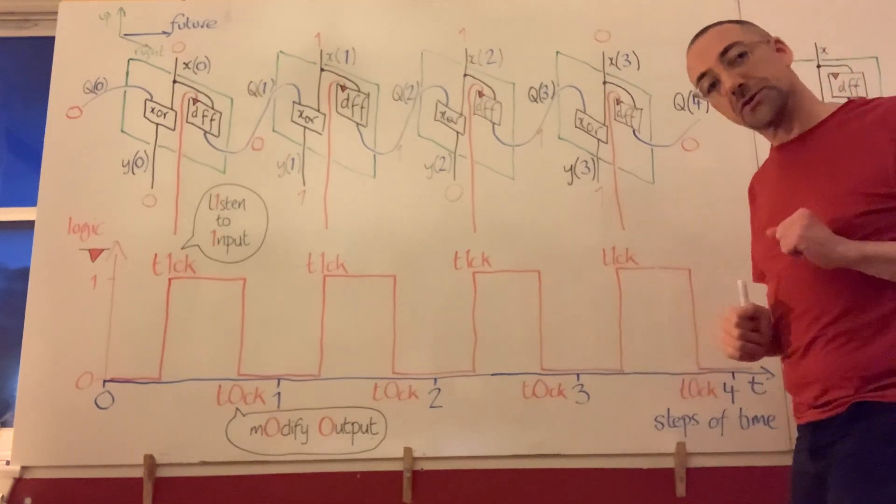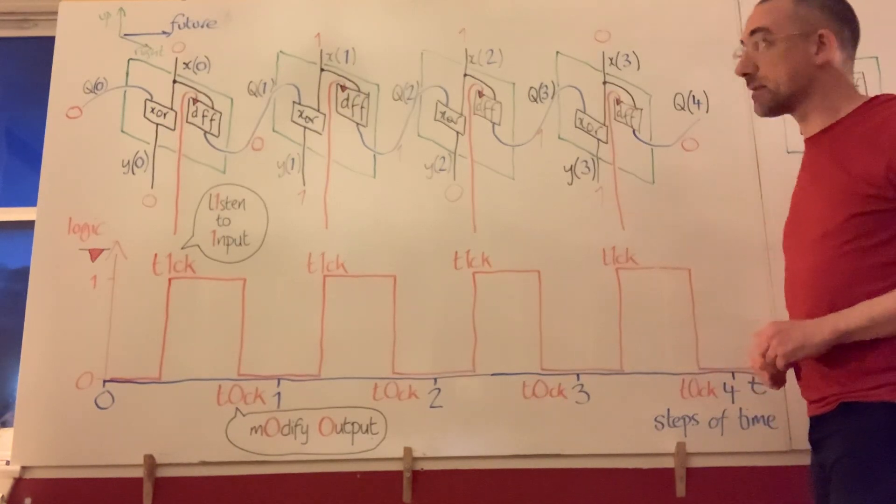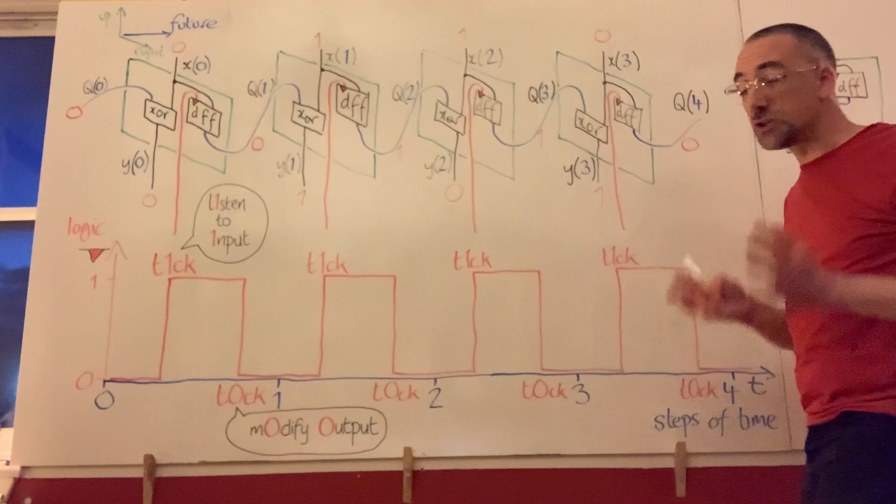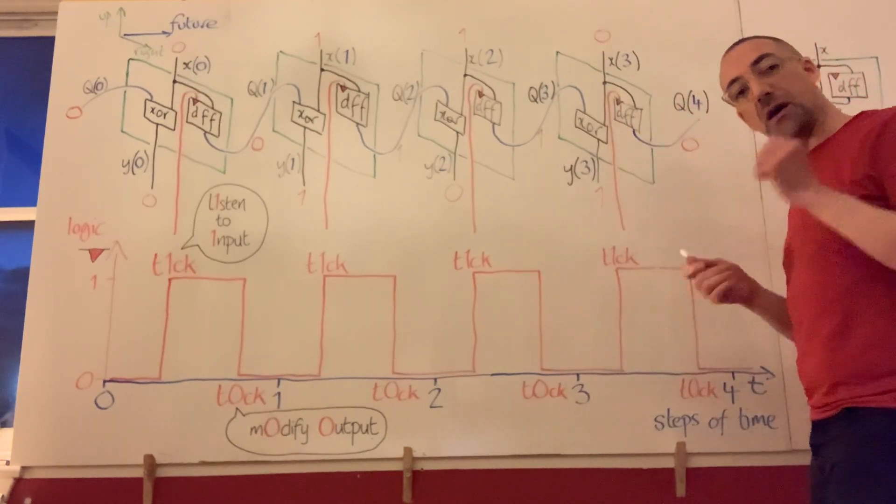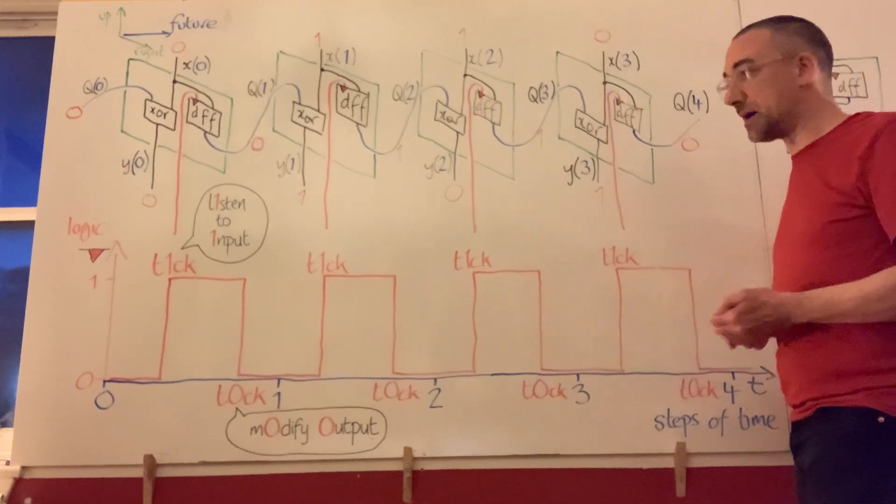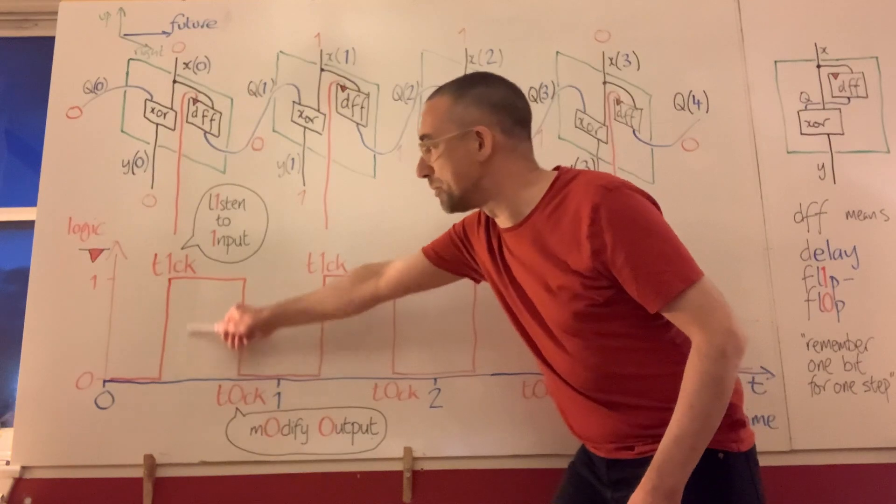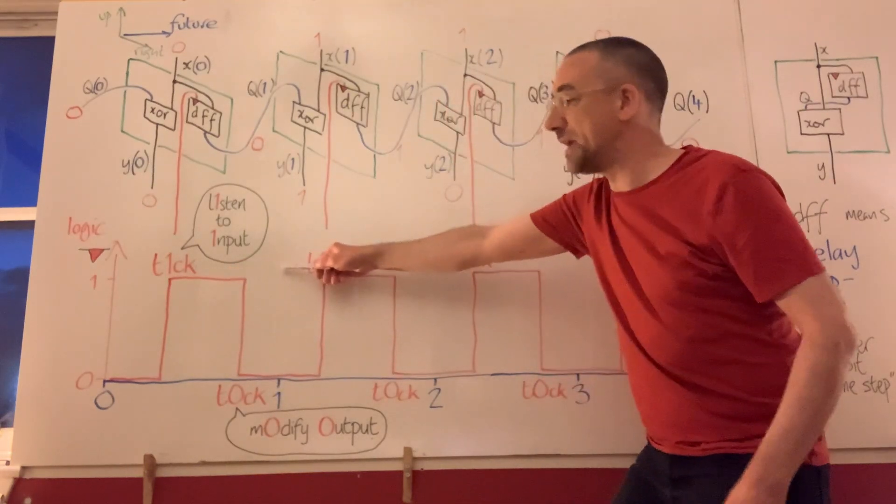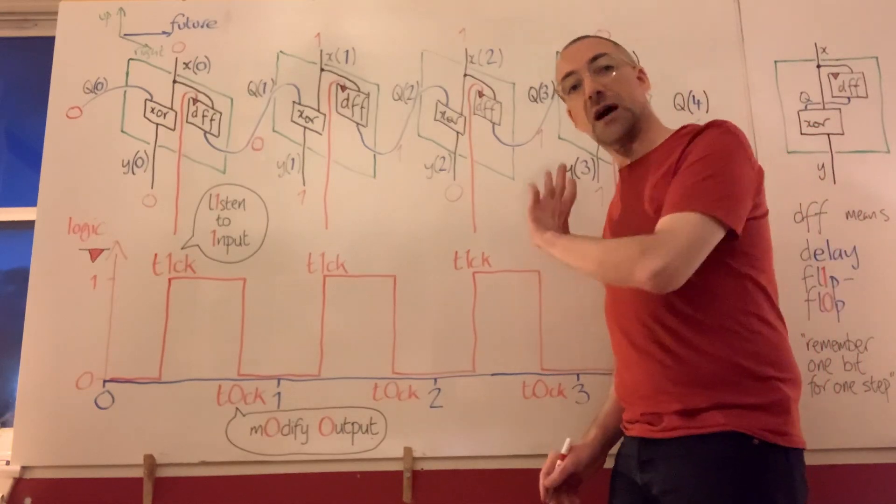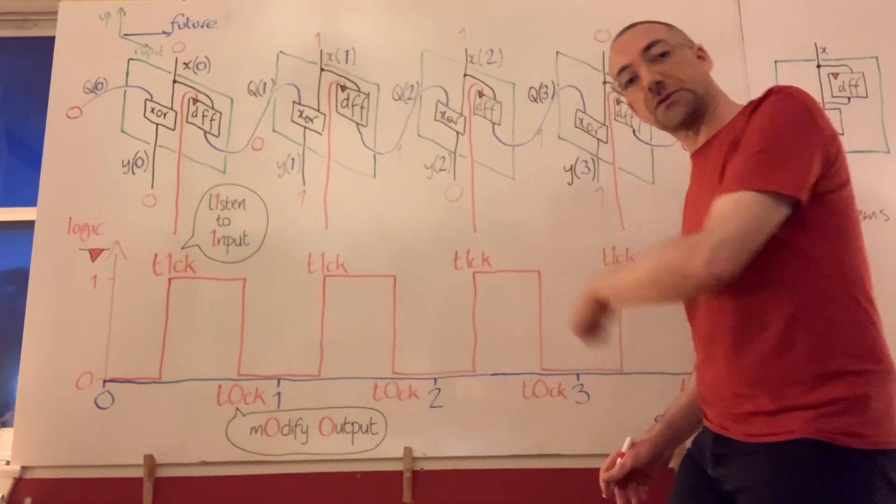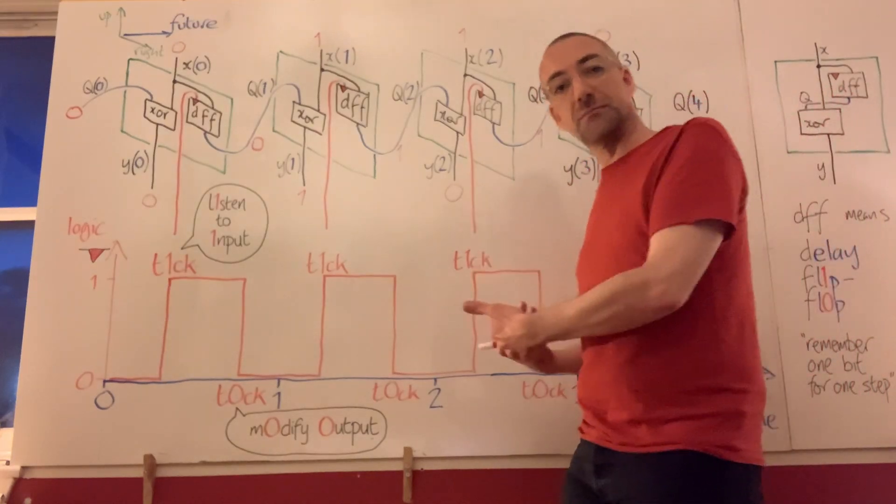So I haven't told you how to build a D flip-flop, but don't worry, I will get there. I've just told you what the idea is, that it remembers a bit from the past, controlled by its clock. It looks at its input on the tick, and then it changes its output on the tock. So as long as we have a clock signal sending in tick-tock, tick-tock, that will create an idea of time step.